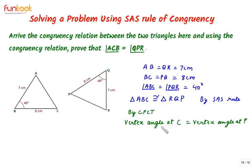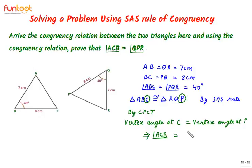Now by CPCT, the vertex angle at C should equal the vertex angle at P. The vertex angle at C is angle ACB, and the vertex angle at P is angle QPR. Therefore angle ACB equals angle QPR, which is what we had to prove.